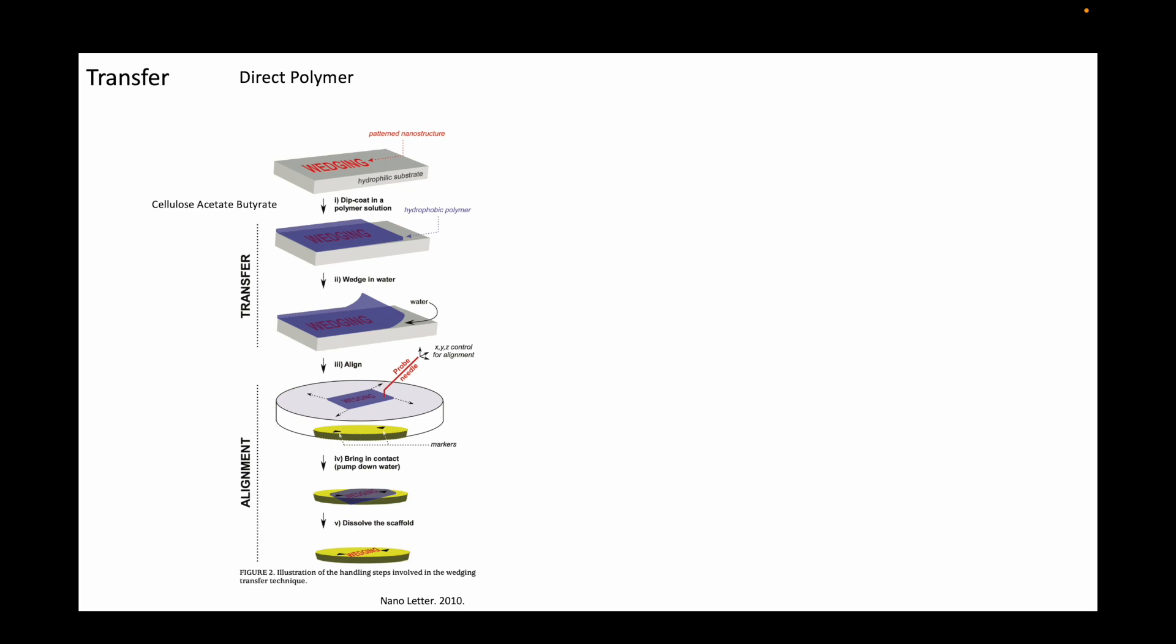Then this chip is slowly immersed in water. Due to the hydrophobicity of cellulose acetate butyrate, the film along with graphene is peeled away from the hydrophilic silicon dioxide and is left afloat on water.